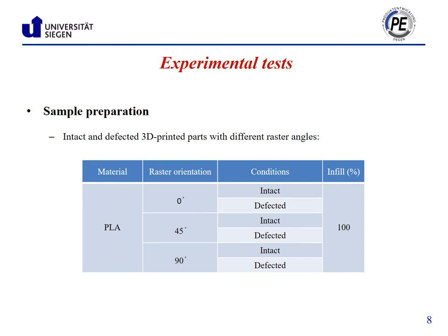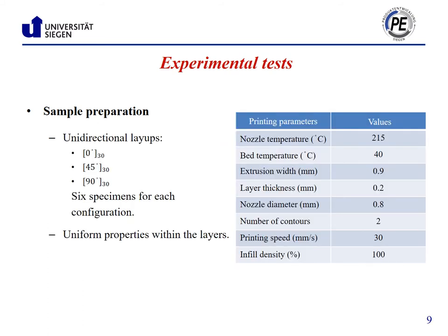The table in this slide shows some conditions of the 3D printed PLA wood parts. In each raster orientation, intact and un-defected specimens were printed, and infill density was set to 100% in all cases. Printing parameters such as nozzle temperature, printing speed, infill percentage, and layer thickness are summarized in this table. Since layer thickness is equal to 0.2 mm and specimens are printed in 30 layers, specimen thickness is 6 mm.